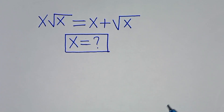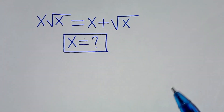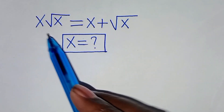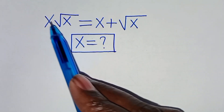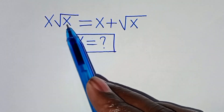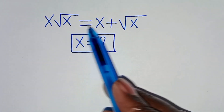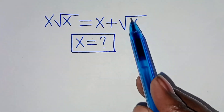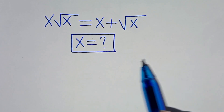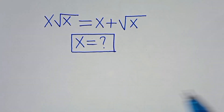Hello everyone, you are welcome to solve this nice math problem, which is x times square root of x. This is equal to x plus square root of x. So what is the value of x?